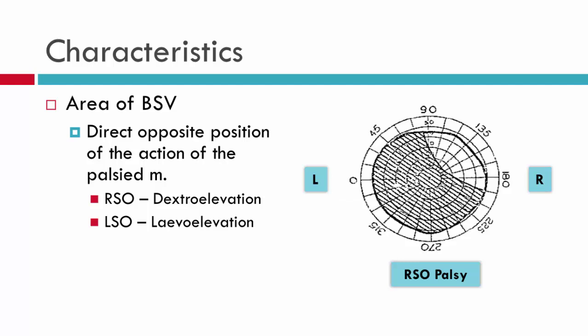The area of binocular single vision will be in the position directly opposite to the field of action of the extraocular muscle, consistent with the abnormal head posture. For a right superior oblique, the area of BSV is in dextro-elevation, because the field of action of the right superior oblique is laevo-depression.